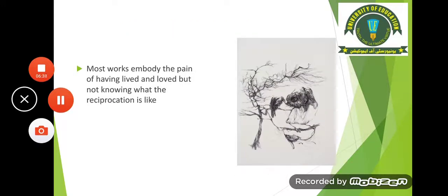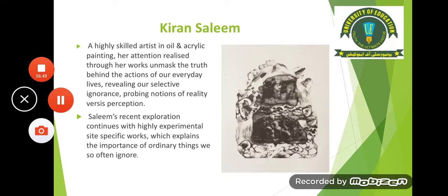Most works embody the pain of having lived and loved but not knowing what the reciprocation is like. The next artist is Kiran Salim — again a female artist and a highly skilled artist in oil and acrylic painting. Her attention, realized through her works, unmasks the truth behind the actions of our everyday lives, revealing our selective ignorance and probing notions of reality versus perception. The artist uses oil paints and acrylics and wants to divert the viewer's attention toward unmasking that truth.